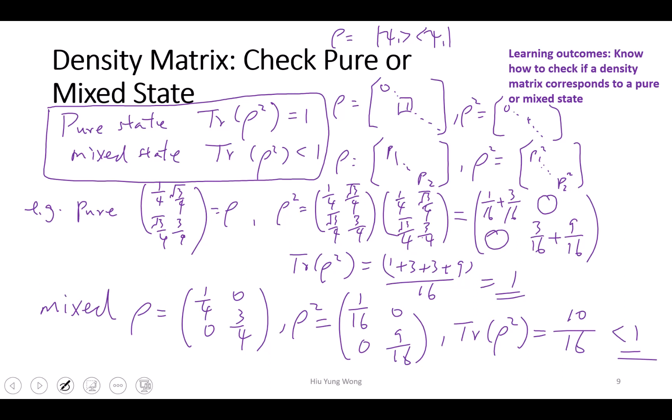To summarize: you check if a matrix is a density matrix by verifying it is positive semi-definite and its trace equals 1. Then to determine if it's pure or mixed, you check the trace of rho squared. Before diagonalization, the diagonal elements are not simple probabilities — but once diagonalized, they represent the probability of each eigenvector state.